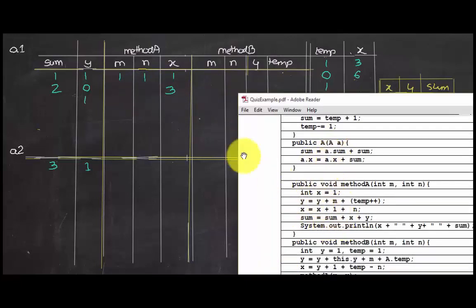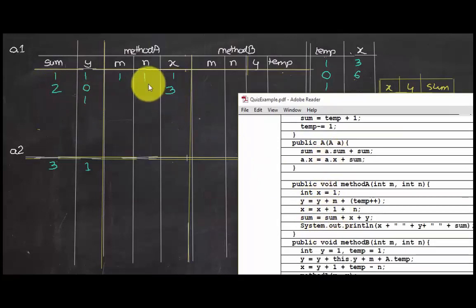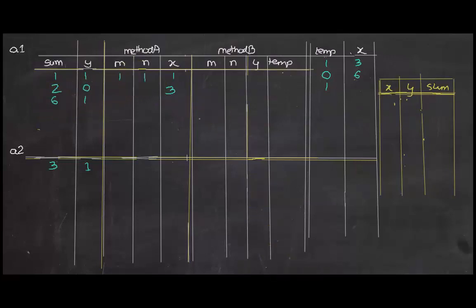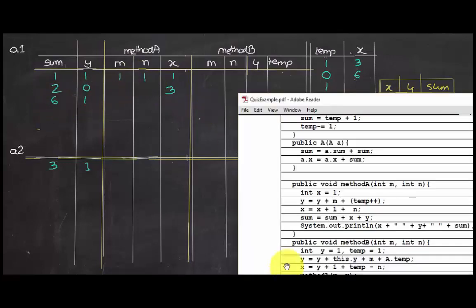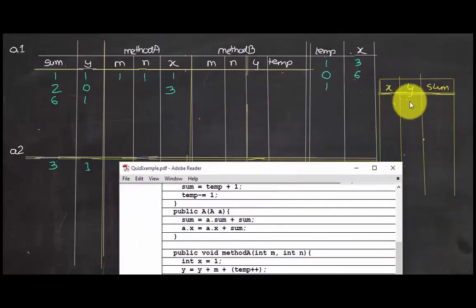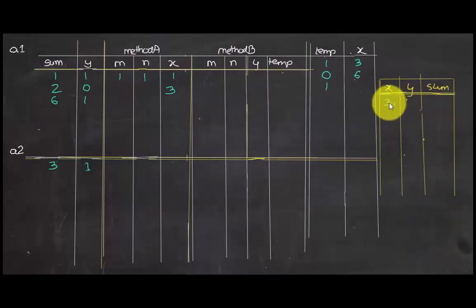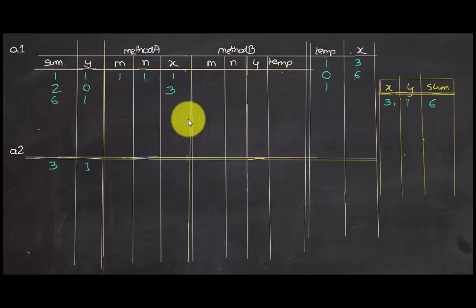Sum equals sum plus x plus y: sum is 2, plus x which is 3, plus y which is 1, so sum equals 6. We then print x, y, and sum, so we print 3, 1, 6.